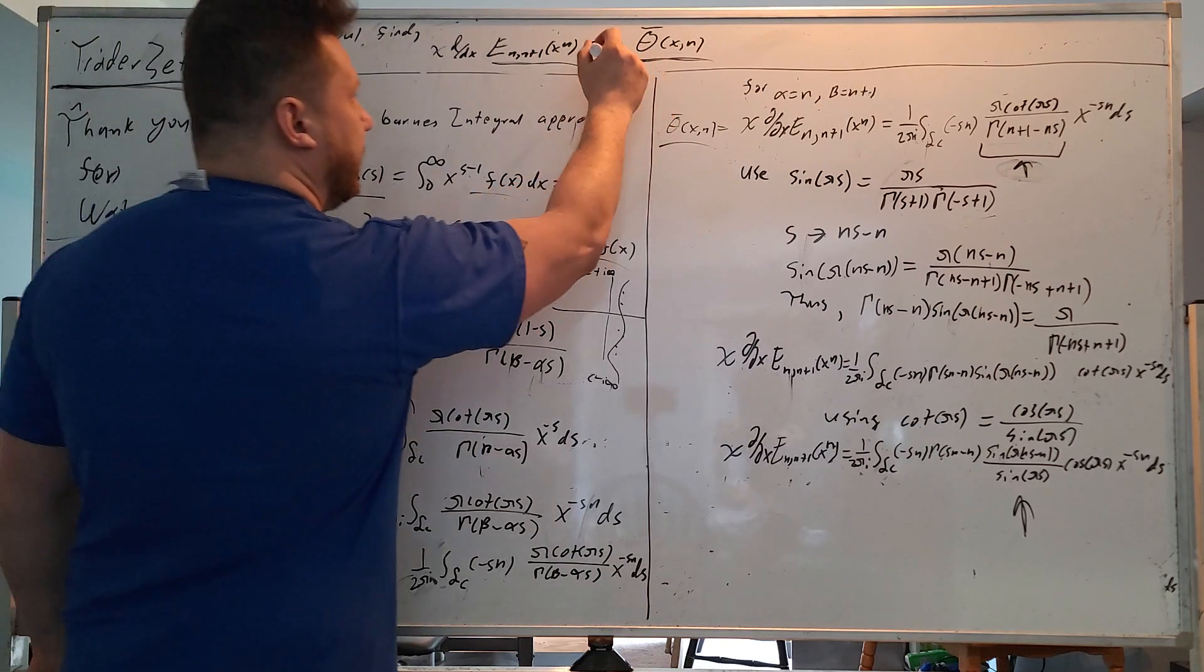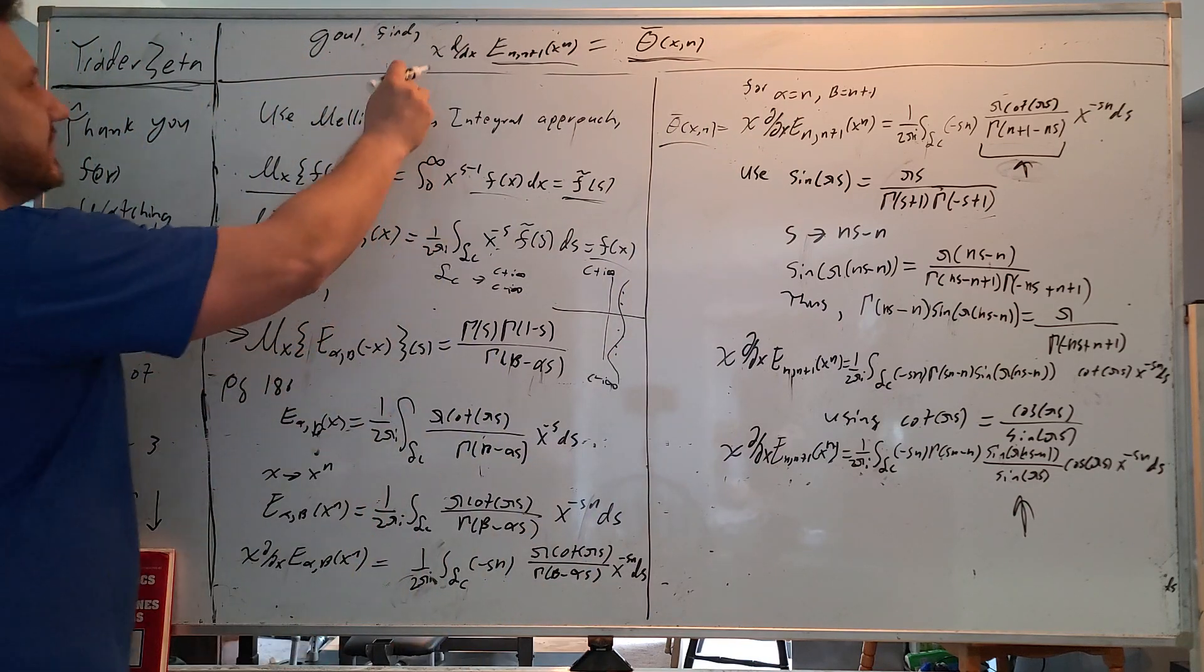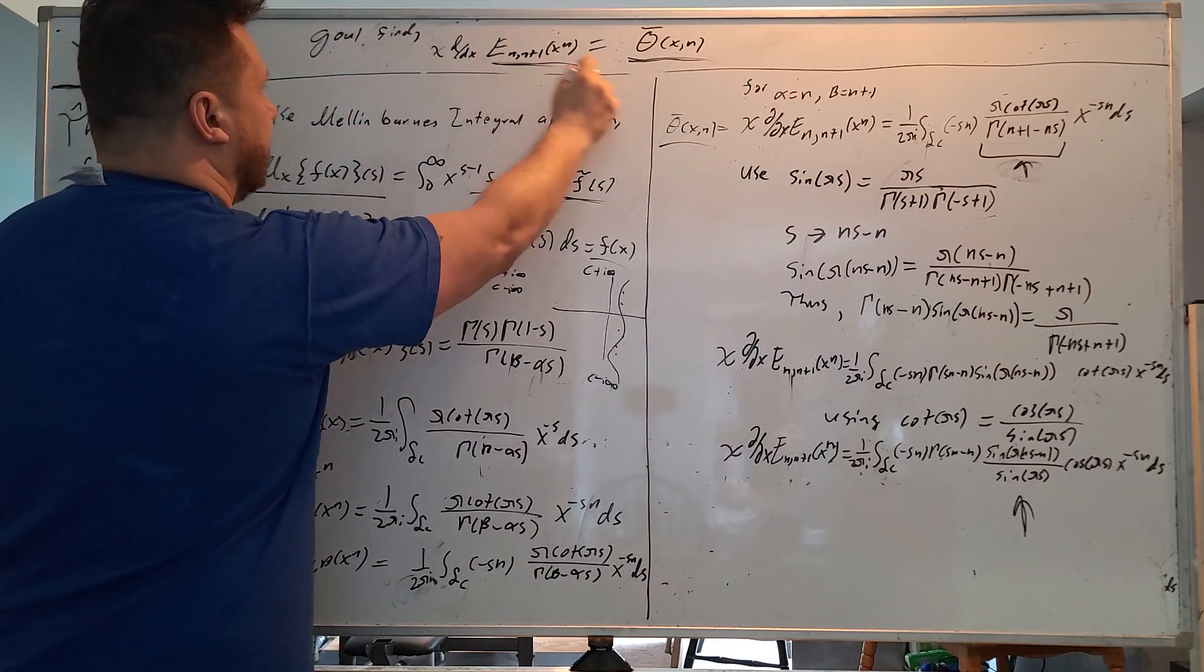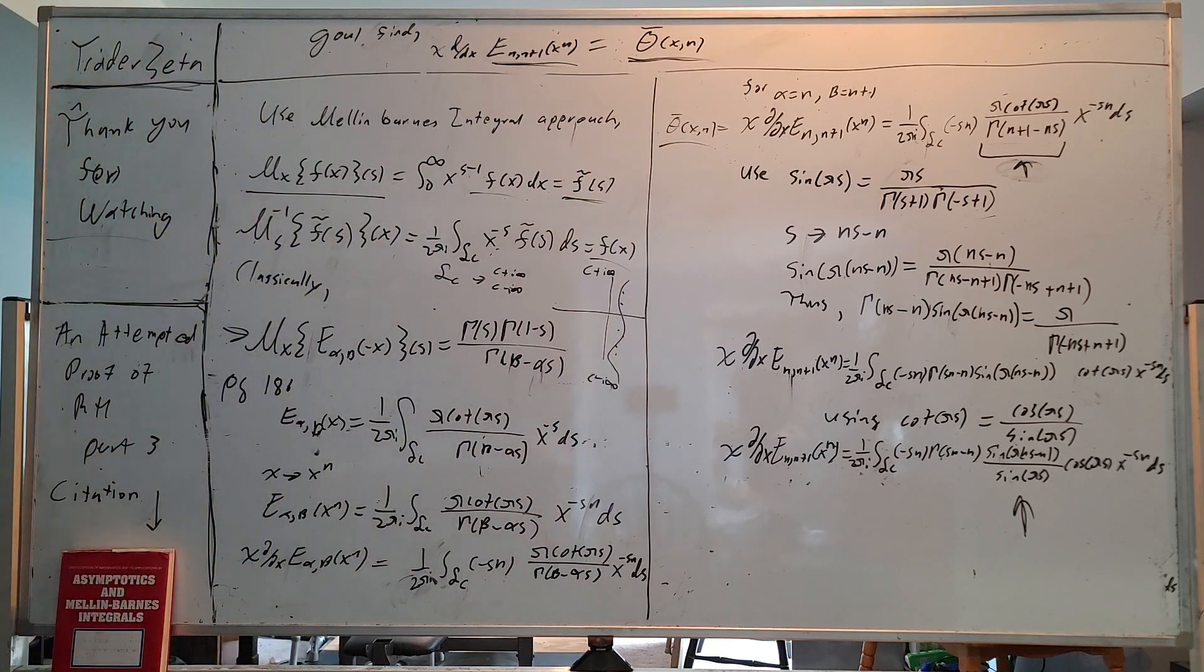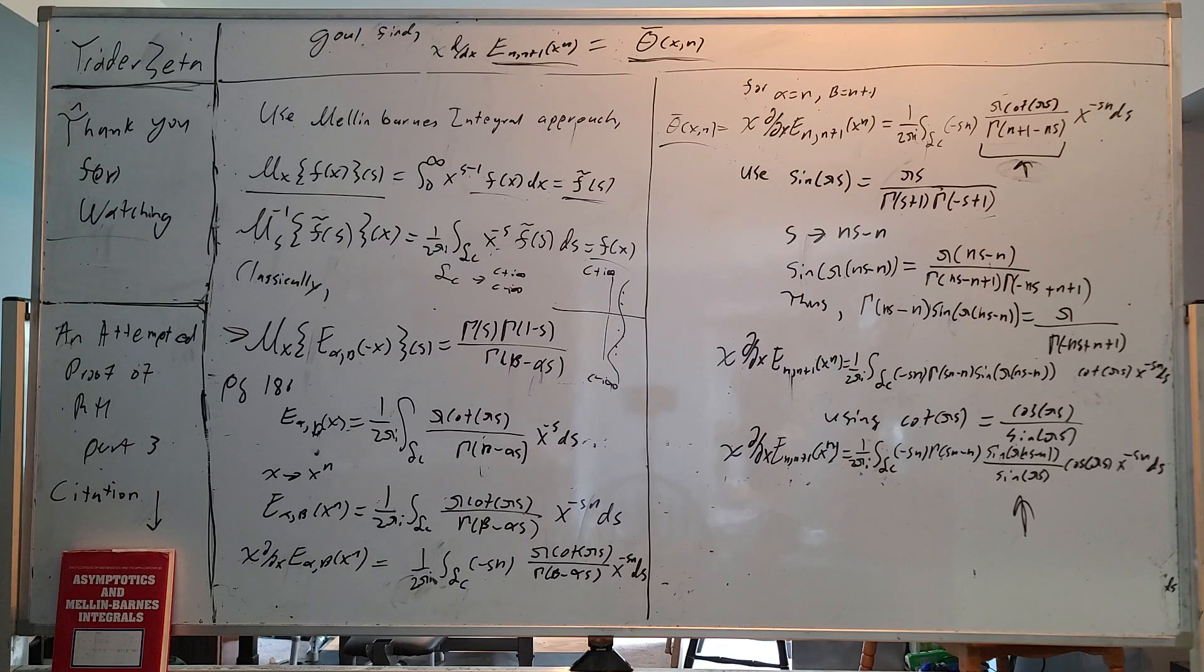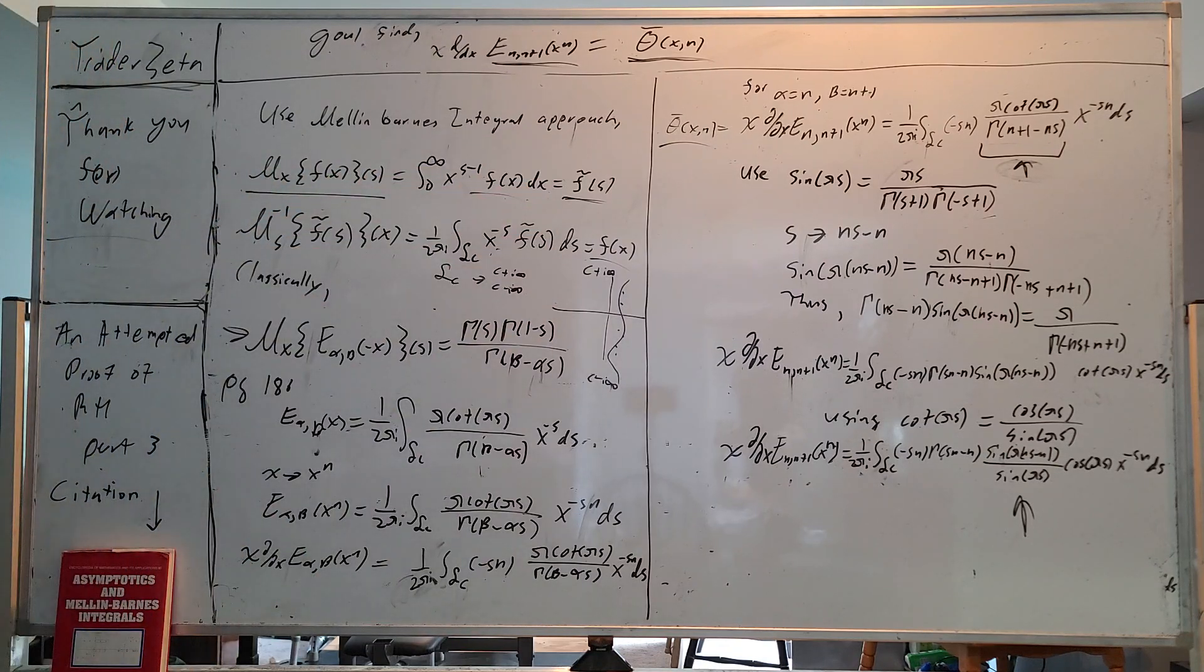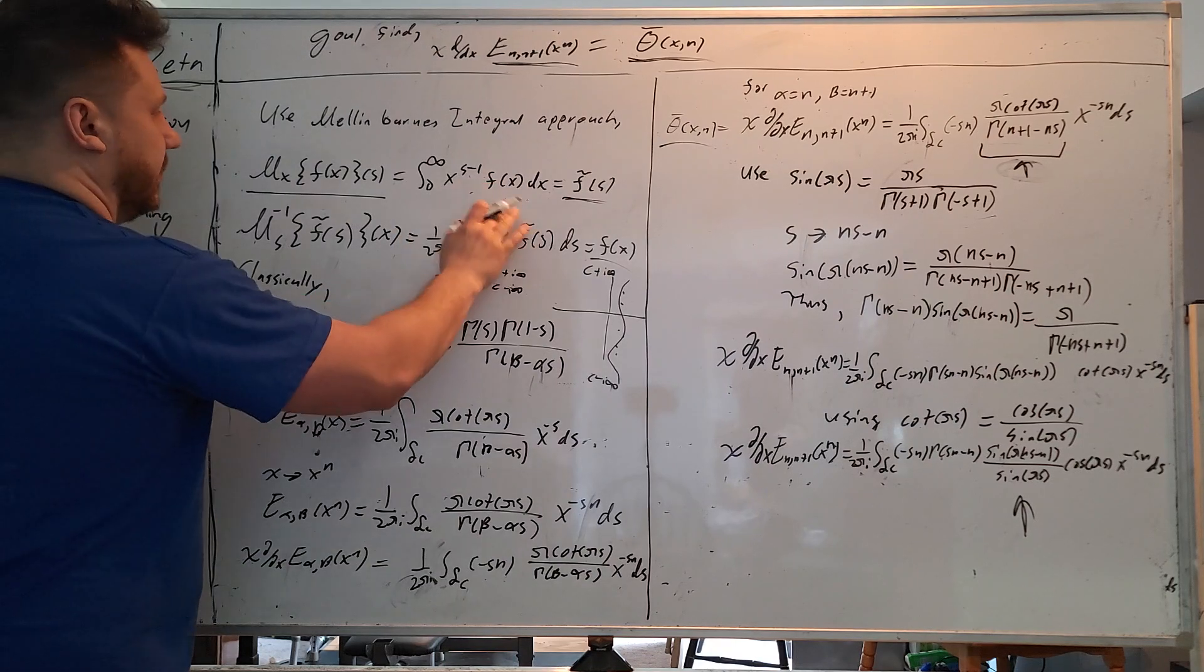Our goal is to find theta bar of xn, which is defined as xdx of this Mittag-Leffler function. And we hope to find some type of asymptotic expansiveness. So we're going to use the Mellon-Barnes integral approach.